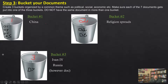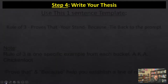Bucket one — all four documents have something to do with China, so I put all four in bucket one. Bucket two was about religion spreading — Japan and Syria — not China, so I put those in bucket two. Bucket three I only have one document: the Russian one with Ivan the Terrible — Russian isolationism. That's my 'however' document. I'm already looking for an excuse to just dump document seven and not even use it.